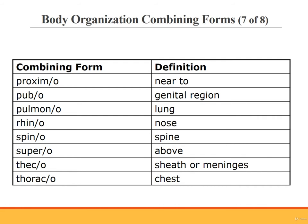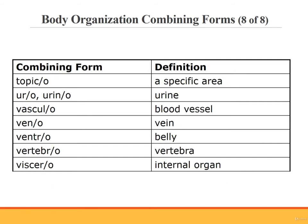Spino. Supero. Theco. Thoraco. Topico. Uro, or urino. Vasculo. Veno. Ventro. Vertebro. Viscero, meaning internal organ. An example of a medical term using viscero is visceral. Visceral means pertaining to internal organs.